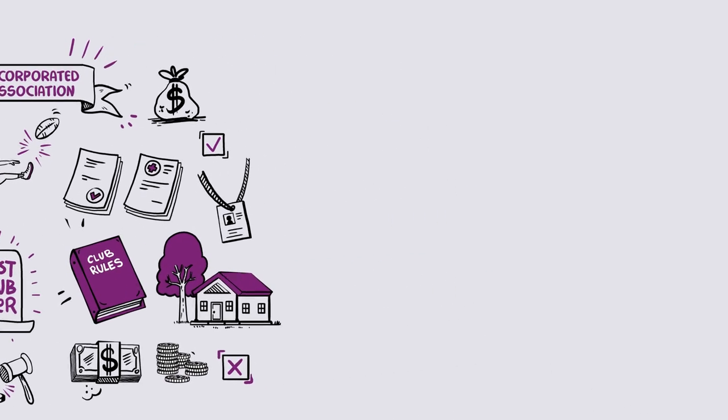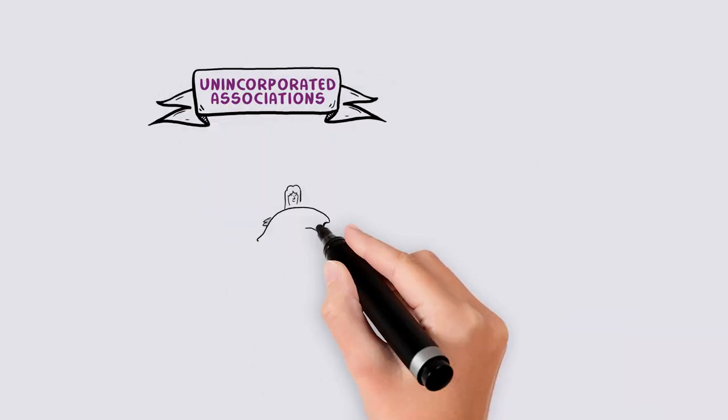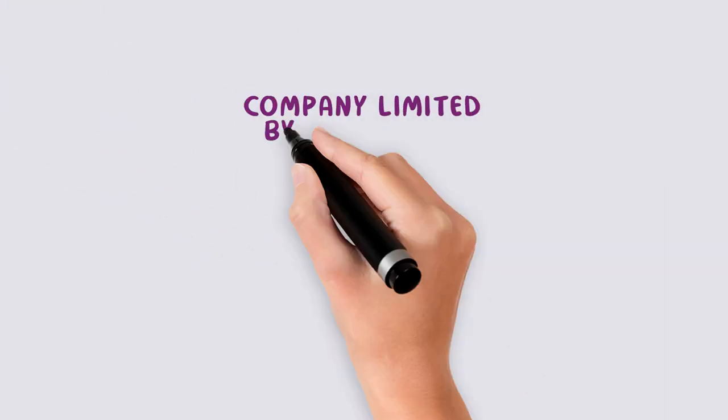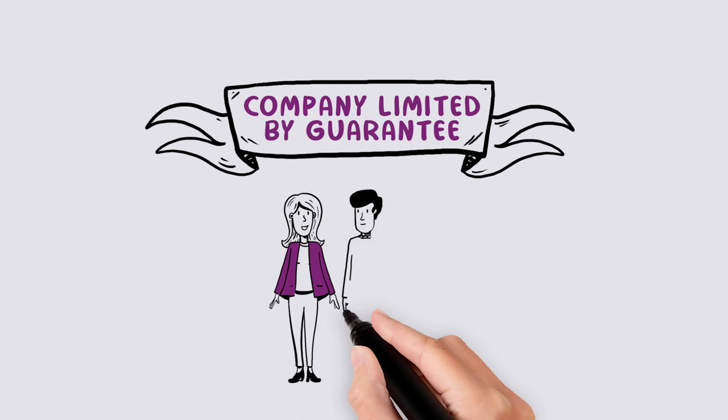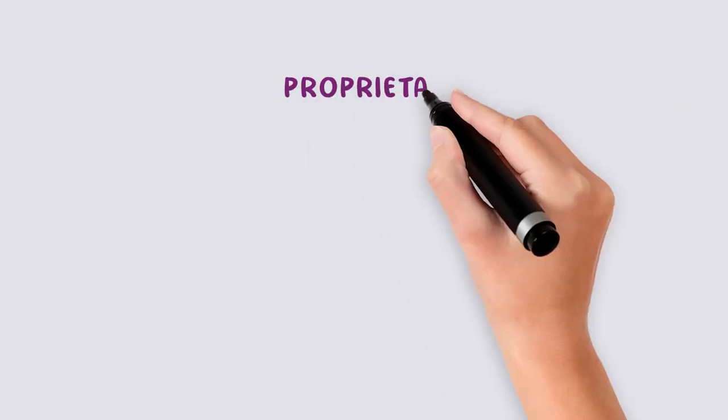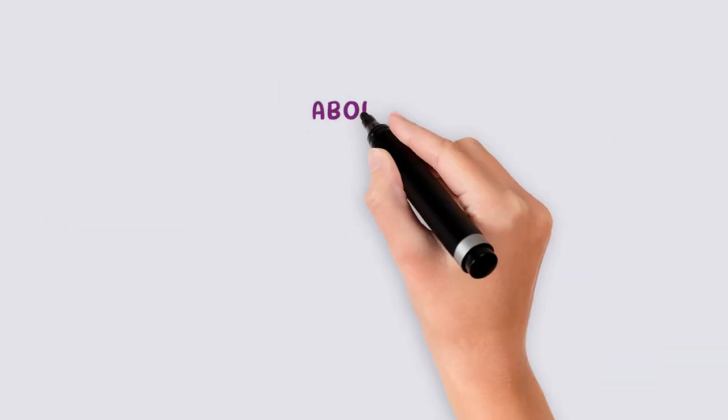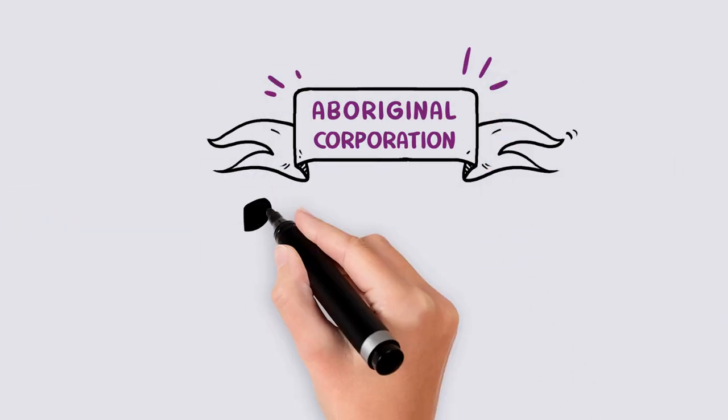There are many other types of legal entities that can be used. These include unincorporated associations, companies limited by guarantee, proprietary limited companies, and Aboriginal and Torres Strait Islander associations.